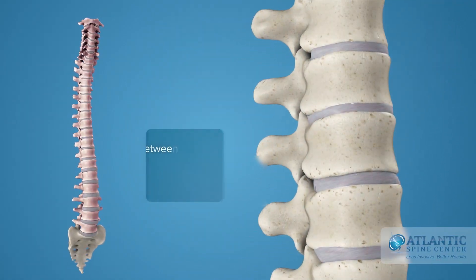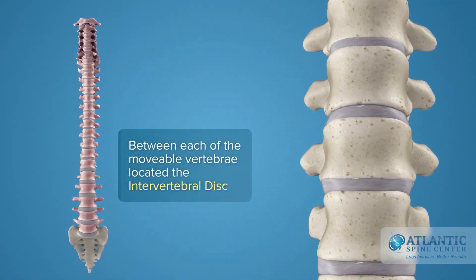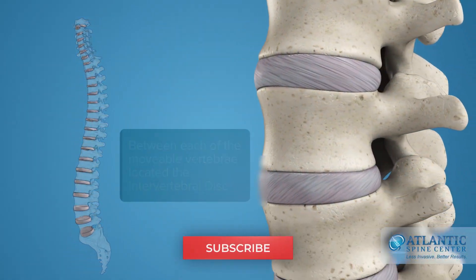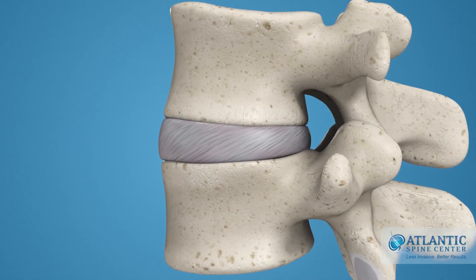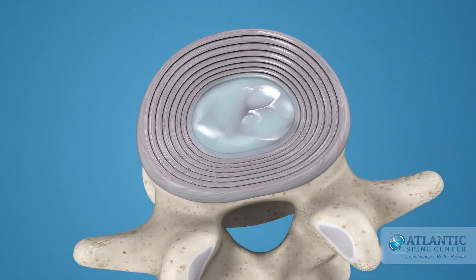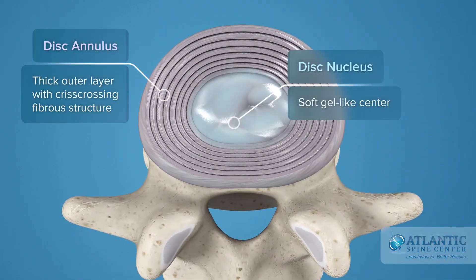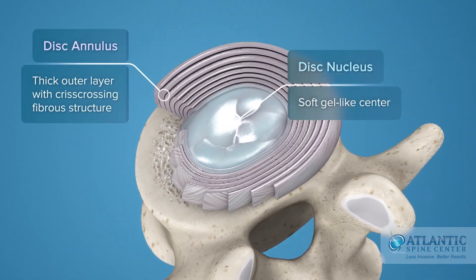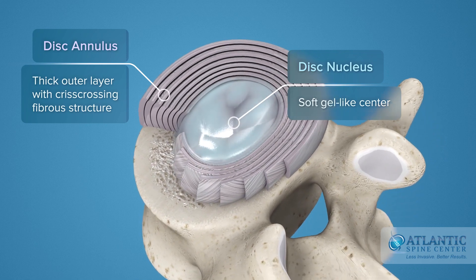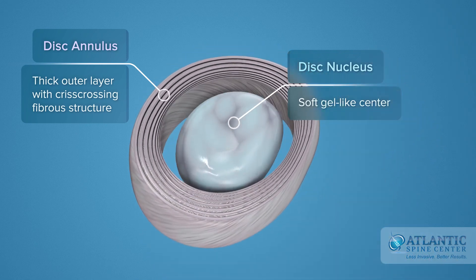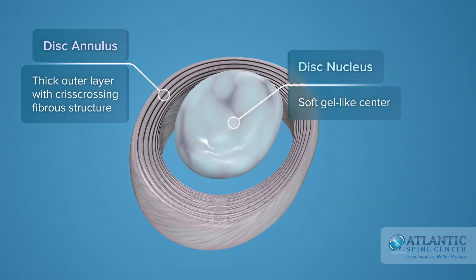Between each of the movable vertebrae is located the intervertebral disc. Intervertebral discs consist of a thick outer layer with a criss-crossing fibrous structure, the annulus, that surrounds the soft gel-like center, the nucleus.